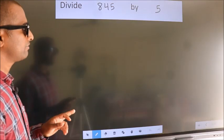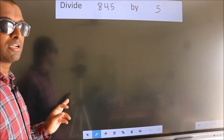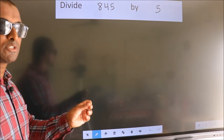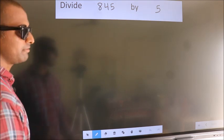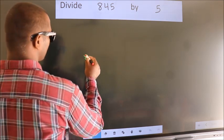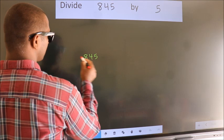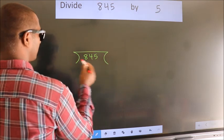To divide 845 by 5, we should frame it in this way: 845 here, 5 here.